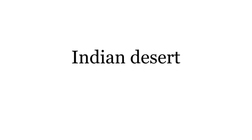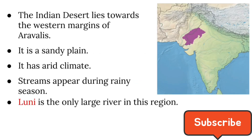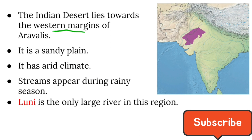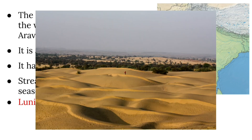Today we are going to see what is the Indian Desert, which is an important part of class 9 geography. The Indian Desert lies towards the western margins of the Aravalli and passes the borders of India and extends towards Pakistan.